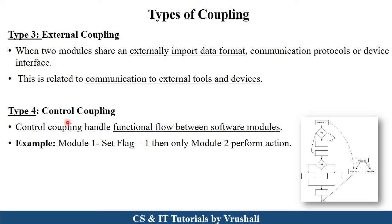The next type is control coupling. Control coupling generally handles the functional flow between software modules. Generally, all flag or Boolean related information is shared here. For example, if a flag is set equal to 1, then only module one's operations are accessed; if the flag equals 0, module one's operations cannot be accessed. So module two controls all the functionalities of module one — this is called control coupling.